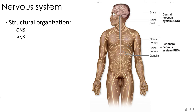The nervous system is the primary communication and control system of the body, and we can classify its components based on its structural and its functional organization. The central nervous system, often abbreviated as CNS, consists of the brain and the spinal cord.